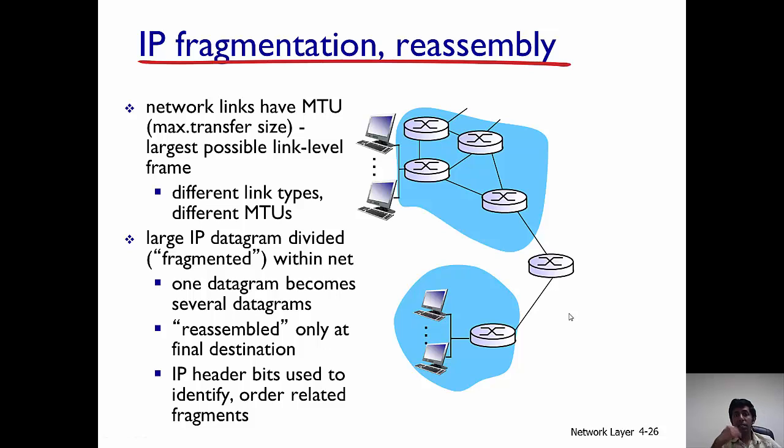Now the issue with sending an IP datagram is that IP is in the network layer. There's another layer beneath the network layer called the link layer. Link layers have something called MTUs or the maximum transfer size, which is the maximum possible link layer frame size.